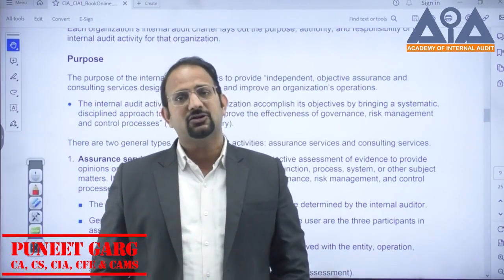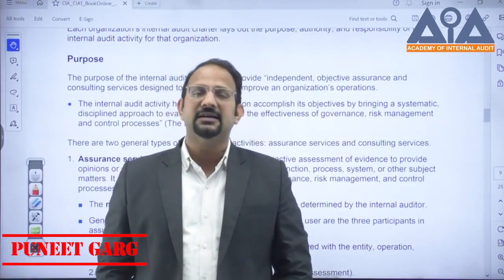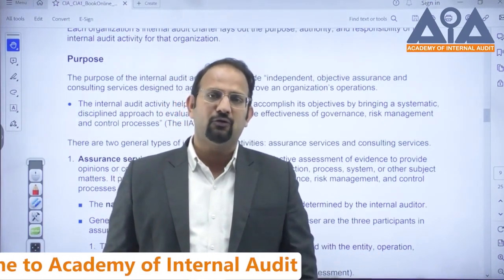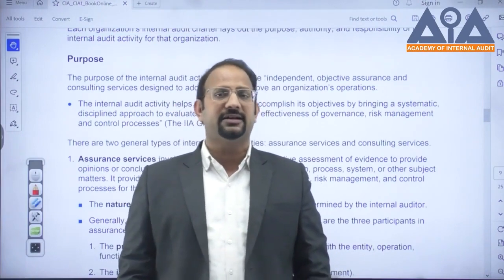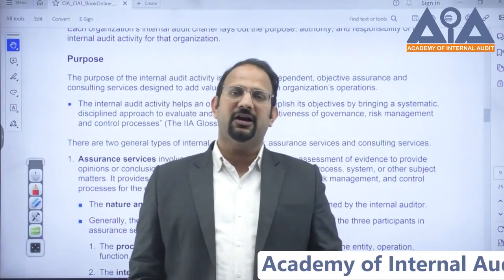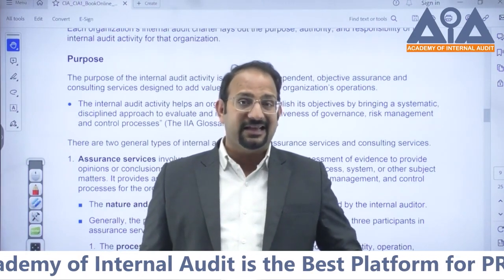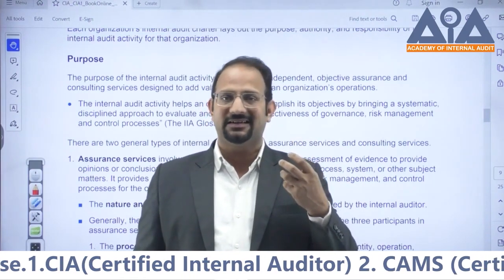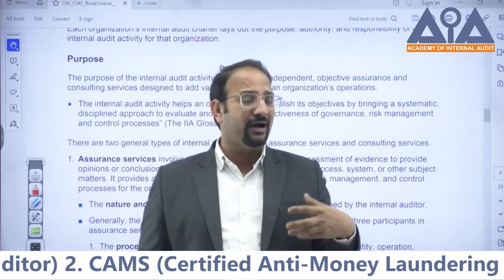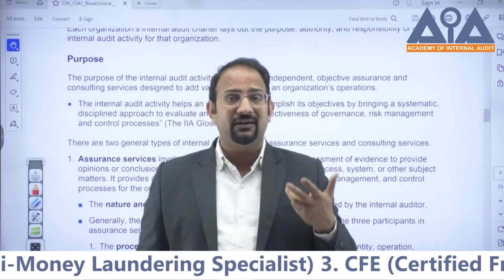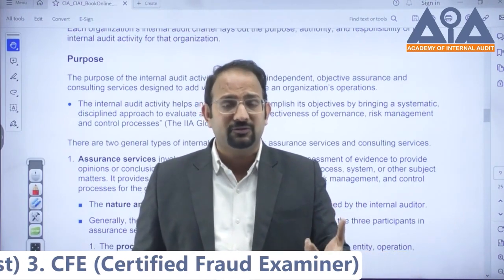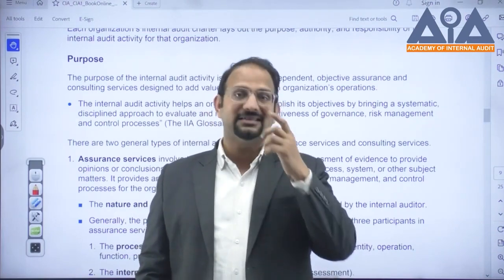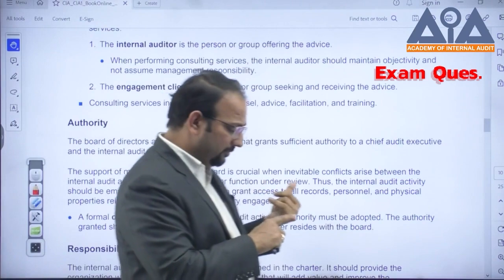What is assurance activity? First, we have to test things, then we provide assurance that we have checked it and everything is found to be in order — or there are certain anomalies or gaps for which we will issue the audit report. We provide these gaps as observations, along with their impact, root cause, and finally the recommendations on how to correct these errors.